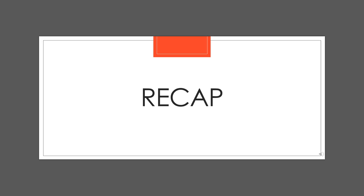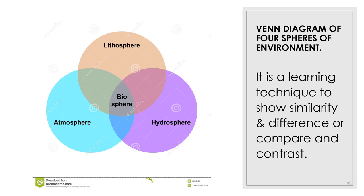Children, I hope you all have understood all the different spheres of the earth and the concept is now clear in your mind. Students, I want you all to do the work I am going to tell you in your rough notebook in writing. On your screen you can see the picture of a Venn diagram which shows the four spheres of environment. There are three circles — one is of lithosphere, another is atmosphere and the third is hydrosphere. When they overlap each other, it shows biosphere. So I want you all to make a Venn diagram in your notebook and practice.